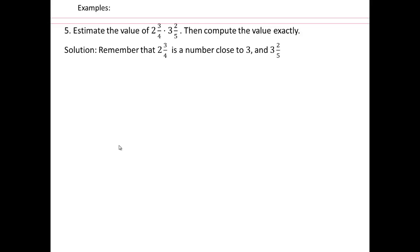So let's take a look. 2 and 3 quarters is a number very close to 3. 3 and 2 fifths is also close to 3. This product should be close to 3 times 3 or 9. So we should expect our answer close to 9.